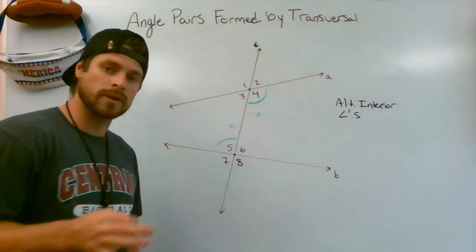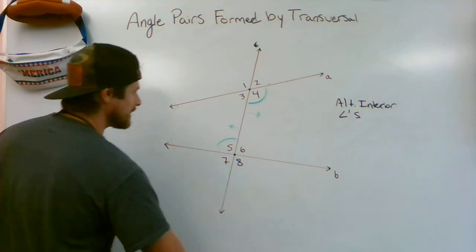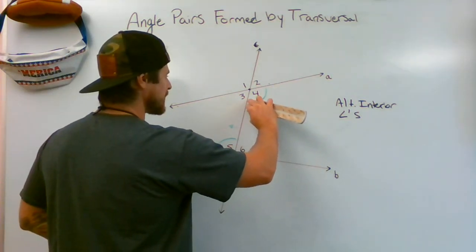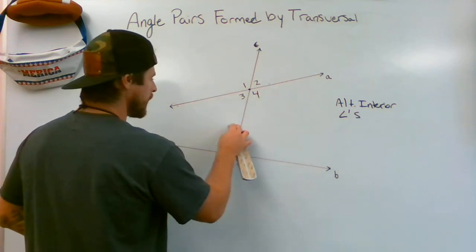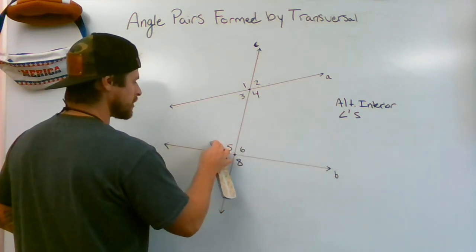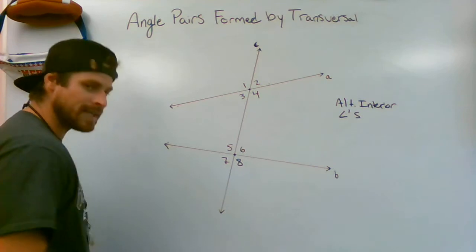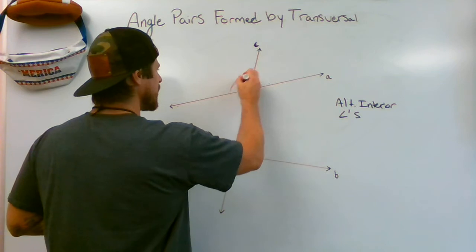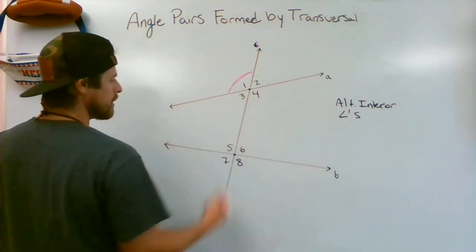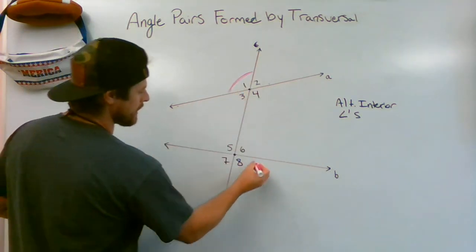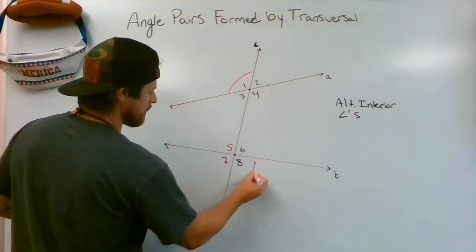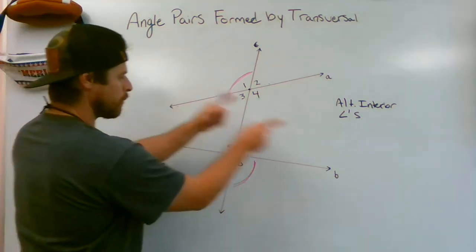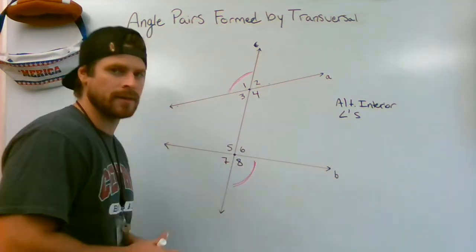Next, alternate exterior — it's literally that simple. You need one angle on the right side of the transversal and one angle on the left side, and these need to be exterior angles. Let's go with one on the left of the transversal and eight on the outside right — eight and one are alternate exterior angles, one on the left, one on the right.